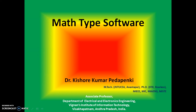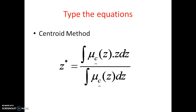So now let me tell you what MathType software is. Here is one example equation — this is the centroid method from fuzzy logic. The equation is: z-star equals the integral of mu_C(z) times z dz, divided by the integral of mu_C(z) dz. This is the equation we need to type somewhere.